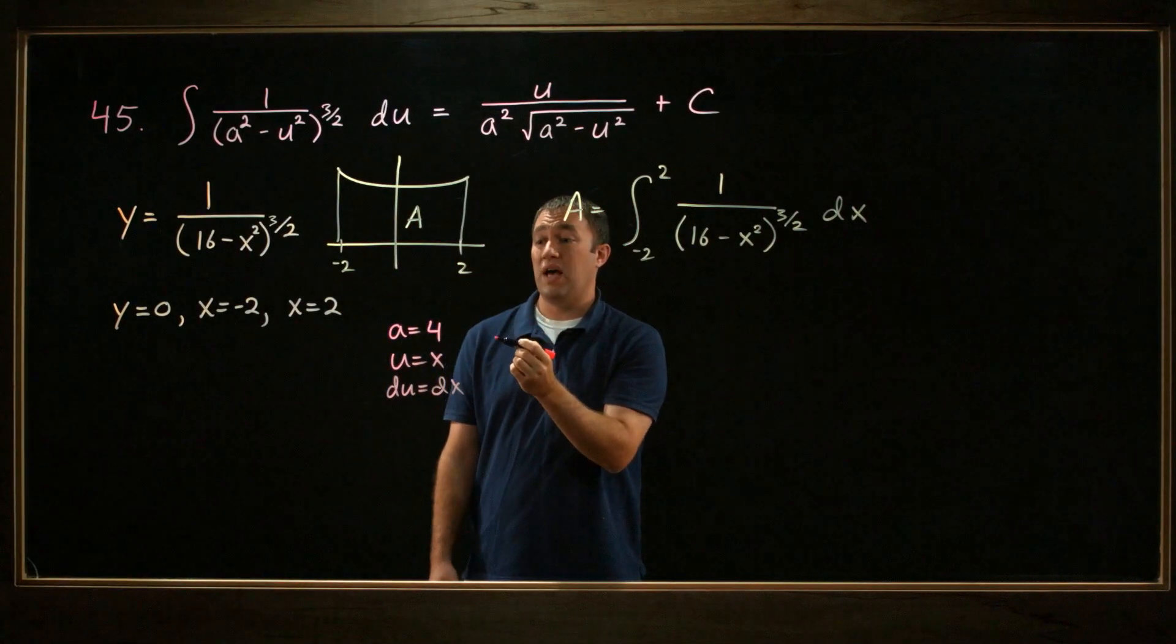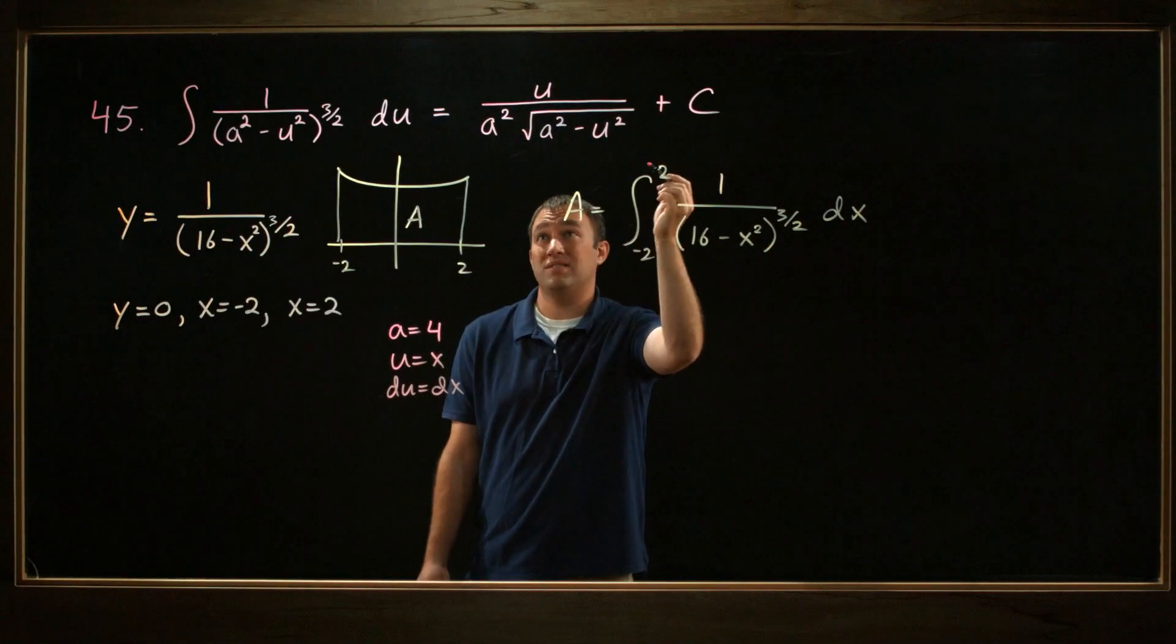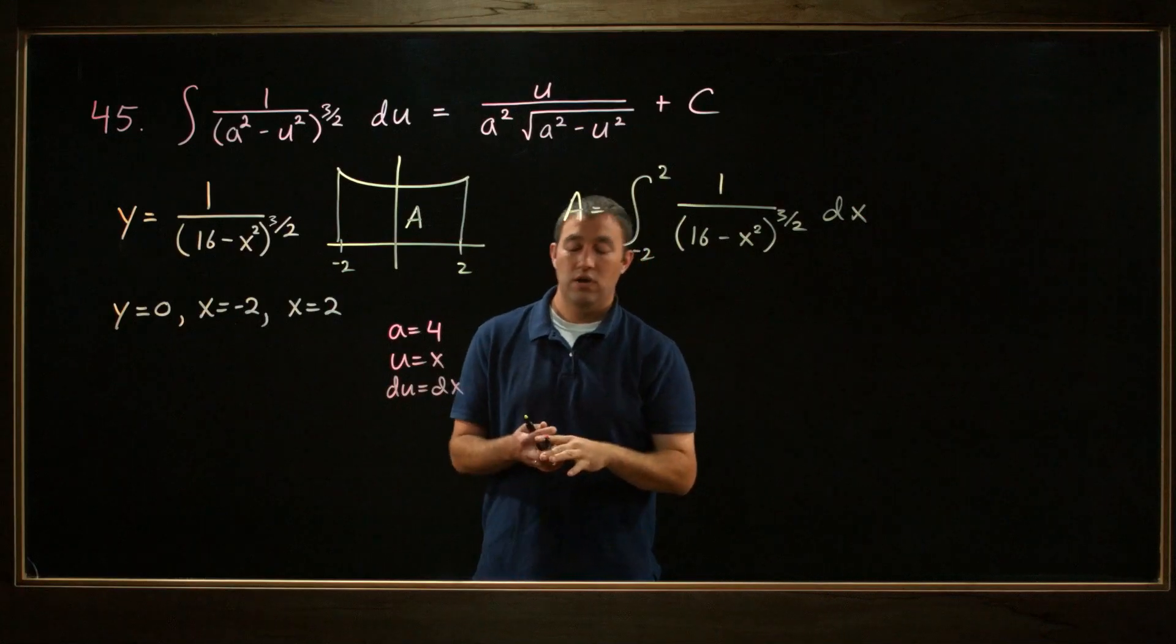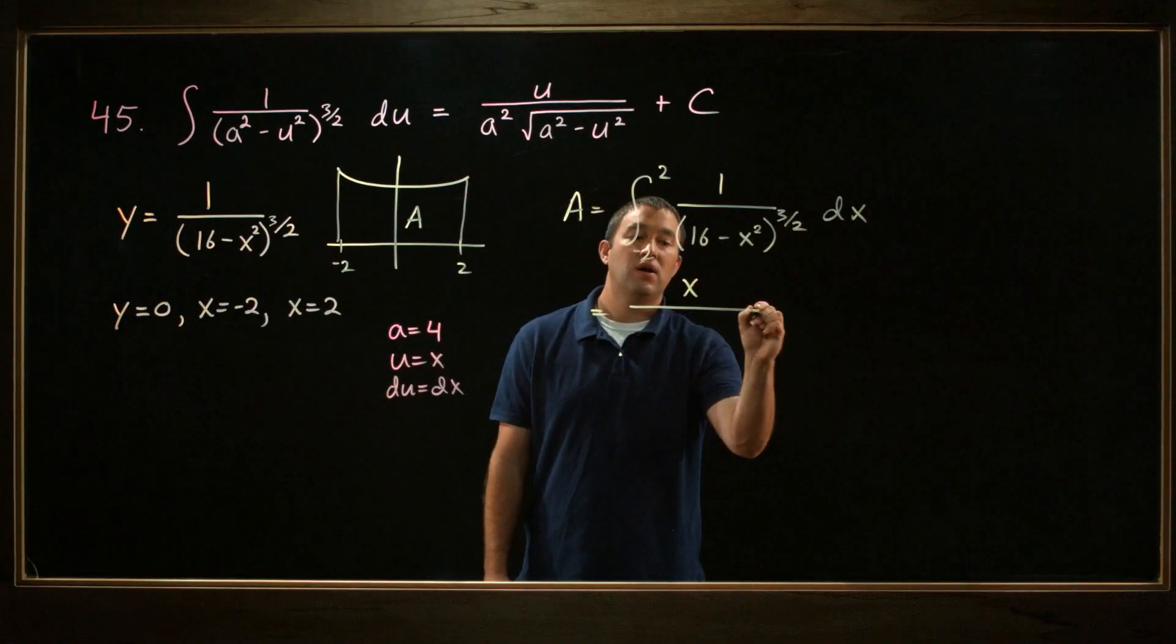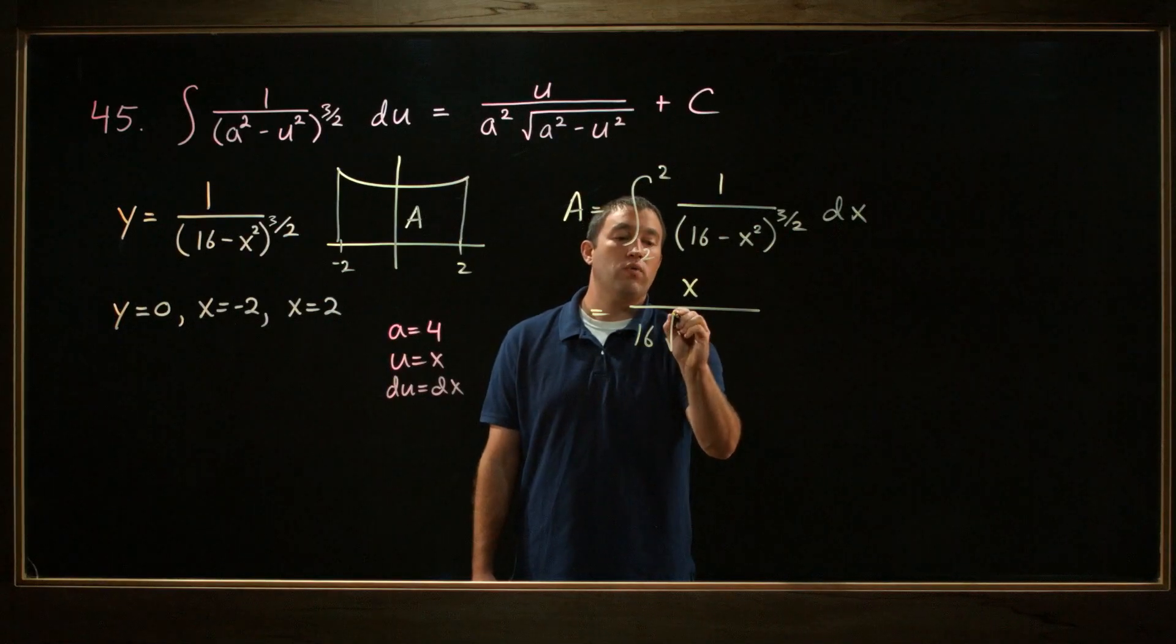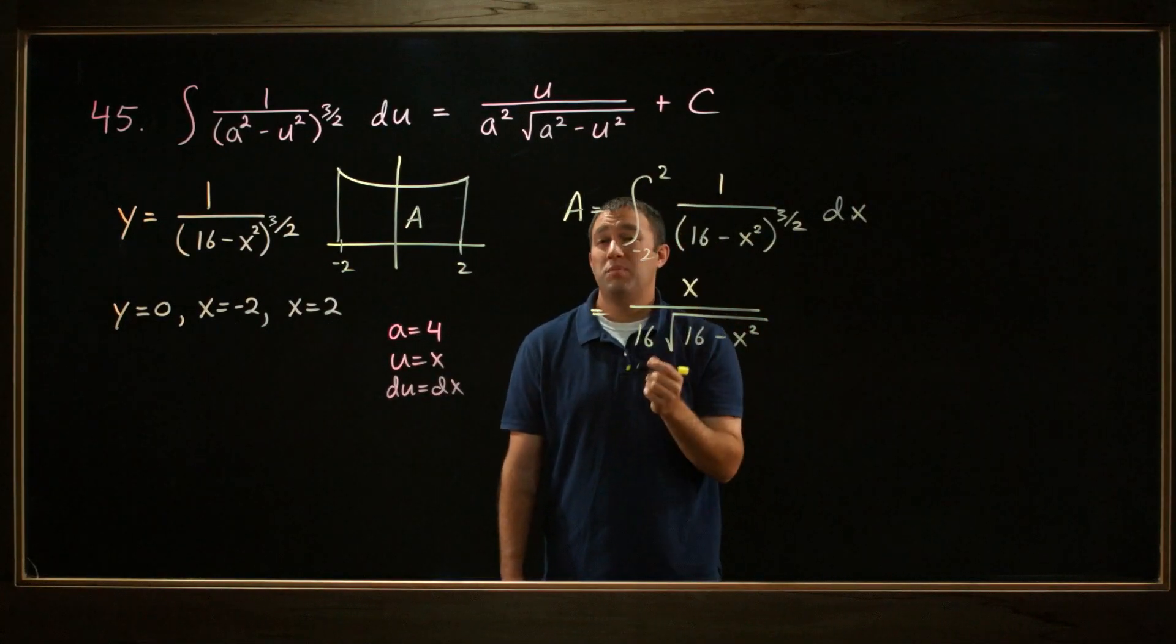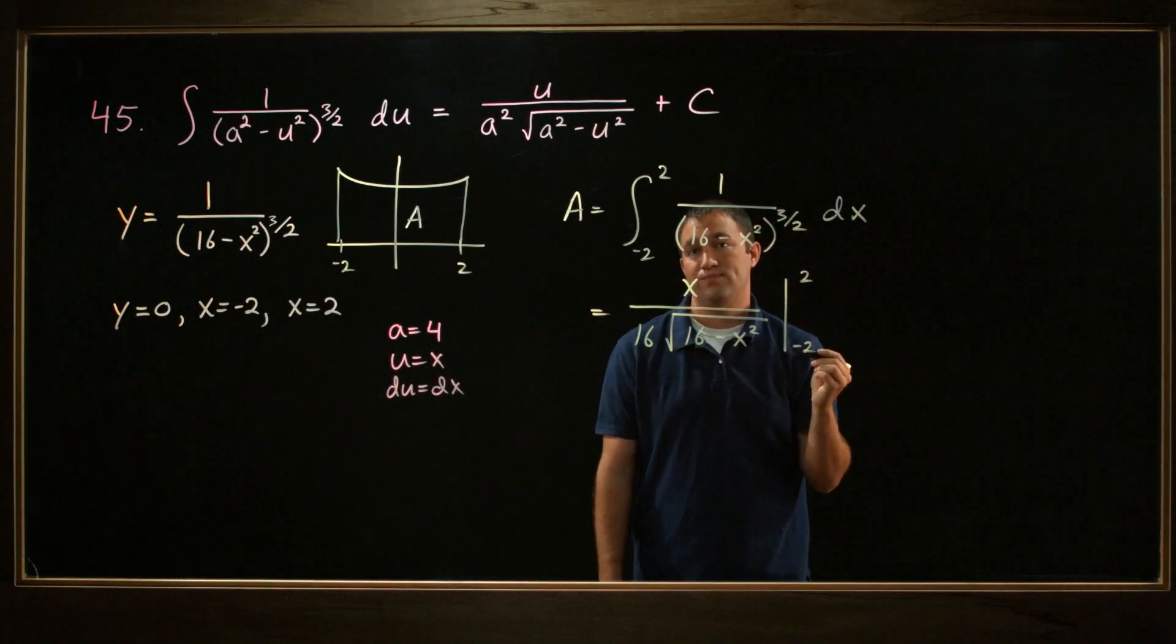So this is going to work out perfectly. I'm just going to replace all the u's in this formula with x's, and all the a's in this formula with 4's. So according to this formula, number 45 in our appendix B, this integral equals, let's see, it's u, which is x, plus x over a squared, which is 16, times the square root of a squared minus u squared. That's 16 minus x squared plus c. But we've got a definite integral here, so we'll evaluate from negative 2 to 2. After we've done that, then we'll have our final answer.